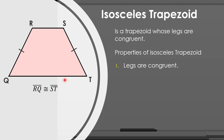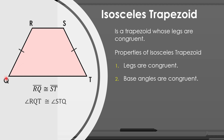Since they are the legs of our isosceles trapezoid. Second, base angles are congruent. We have two pairs of base angles — the upper and the lower base angles. From the properties of isosceles, angle RQT is congruent to angle STQ, since they are the lower base angles. And angle QRS is congruent to angle TSR, since they are the upper base angles.